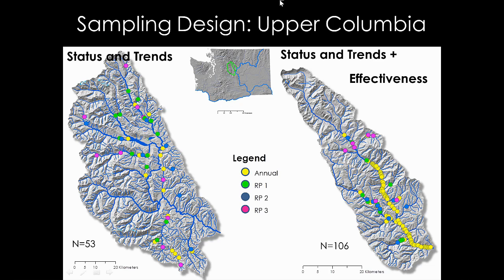In the Entiat watershed, which is an intensively monitored watershed, there are phased restoration or rehabilitation projects that occur every three years during this nine-year experiment. The goal of the monitoring is to track changes at the watershed scale and at the reach scale in response to those projects.